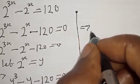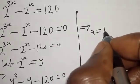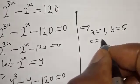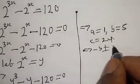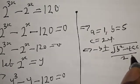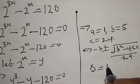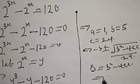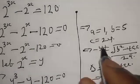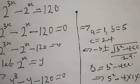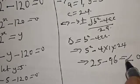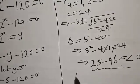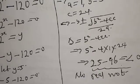Here A equals 1, B equals 5, and C equals 24. The discriminant is B squared minus 4AC, which gives 25 minus 96, equal to negative 71. Since the discriminant is less than 0, there are no real roots from this case.